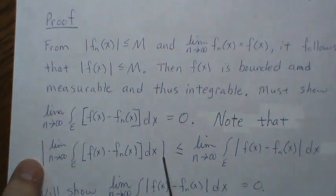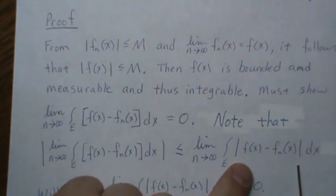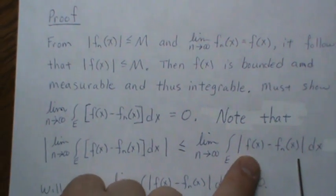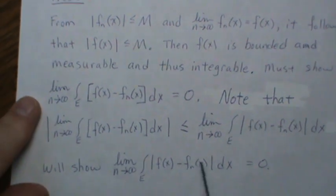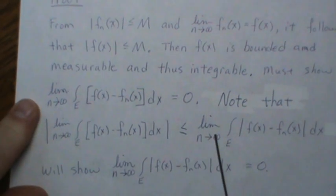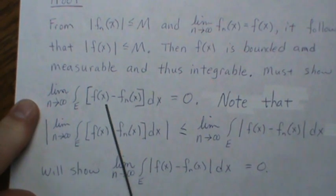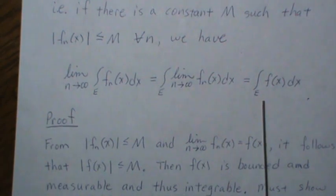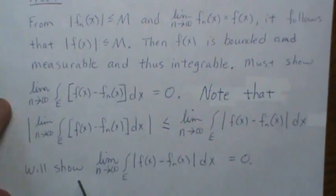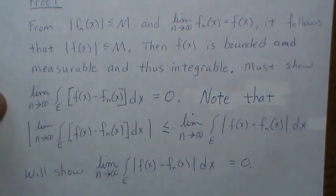So if we take the absolute value of it and that's going to be less than or equal to bringing the absolute values in. So if we can show that this is zero, then this is zero, which implies that this is zero, which implies that this relationship holds. So that's our game plan for this video.